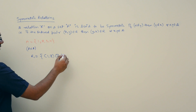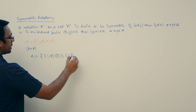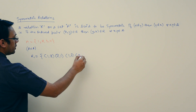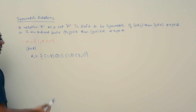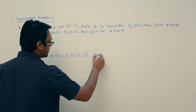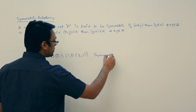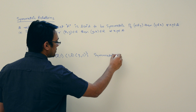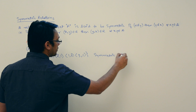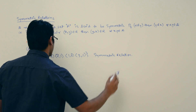In the same way, if the relation is containing (1, 3), then (3, 1) should also be there. So this relation is a symmetric relation.